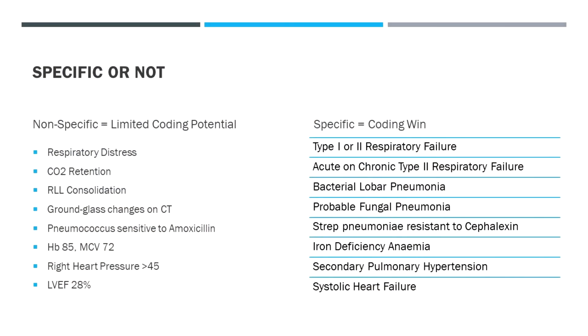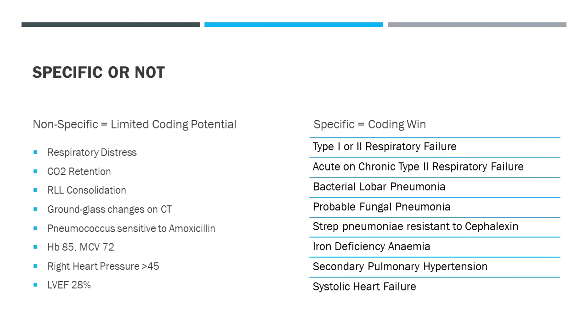Here are a bunch of specific and non-specific terms. The non-specific ones have very limited coding potential — some can't be coded at all. For example, results like HB 85 or MCB 72 — I would interpret that as microcytic anemia, but that's an interpretation and therefore an assessment or diagnosis made upon reviewing the results. Likewise, respiratory distress can be coded in a non-specific way as more of a symptom, but type 1 or type 2 respiratory failure really adds more to complexity and an accurate representation of what the patient is going through.